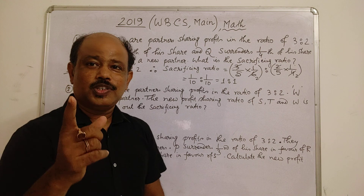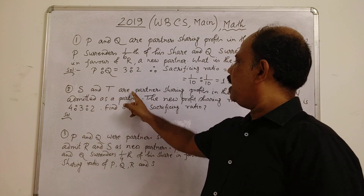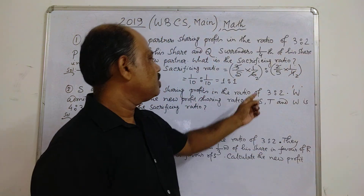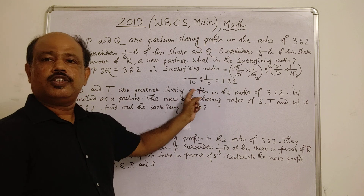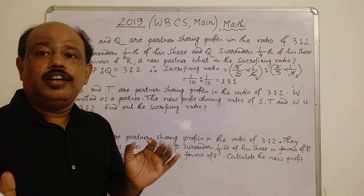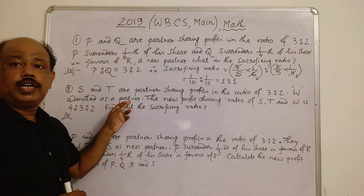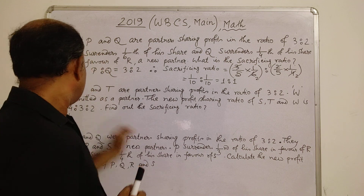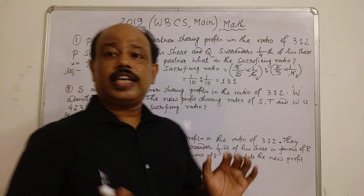Question number 2: S and T are partners sharing profits in the ratio of 3 to 2. W is admitted as a new partner. The new profit sharing ratio of S, T, and W is 4 is to 3 is to 2 — given in the question. Find the sacrificing ratio.